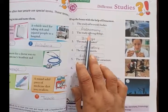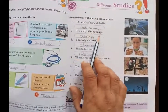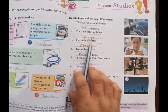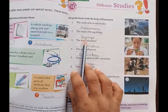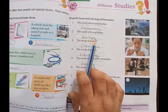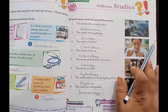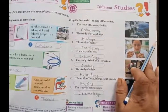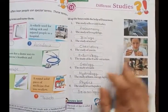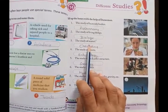Second: the study of living things. Biology — B-I-O-L-O-G-Y. Biology. Study of living things matlab jo jivit vyakti hote hain unke baare mein padhai ki jati hai, usse kehte hain biology. Third: the study of matter — kisi padaart ya dhatu ke baare mein jab hum jaankari prapt karte hain.